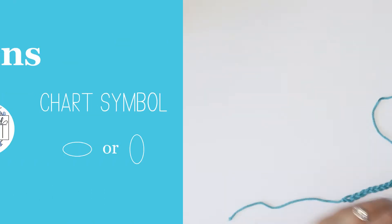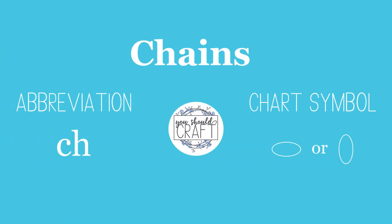When you see chains in a pattern they'll be represented with the abbreviation CH, and if you see them in a chart they'll be represented by an oval, which could be horizontal or vertical depending on where the chain is in the project.